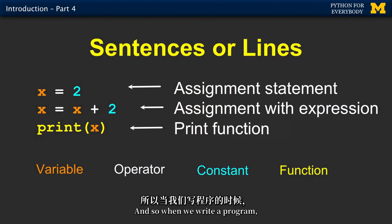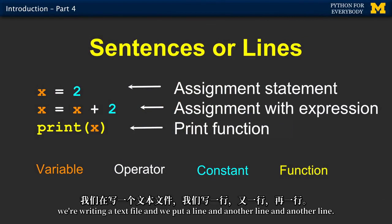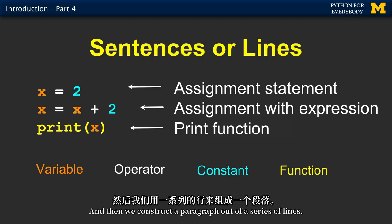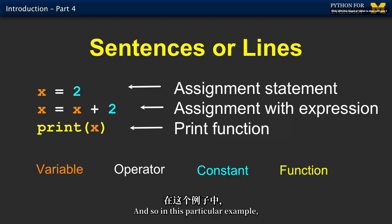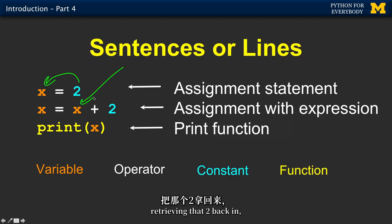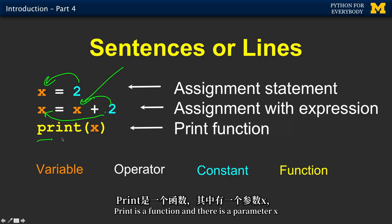Sentences are lines. When we write a program, we're writing a text file and we put a line and another line and another line. Each one is like a separate line and we've got to get them right. We construct a paragraph out of a series of lines. In this particular example, we have an assignment statement that's sticking the number two into the variable x.